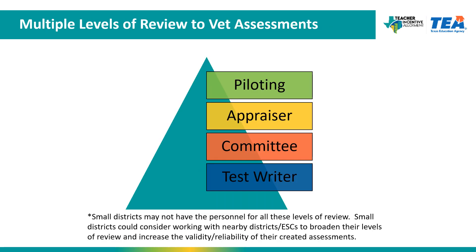This graphic shows an example of multiple levels of review that districts could utilize when implementing district-created pre-test post-tests. At the bottom is the test writer, who is the first level of review. The test writer takes the assessment to a committee — which could consist of teachers — and once approved by the committee, it is then approved by an appraiser. Lastly, it would be time to pilot the assessment, gather data, and make changes before issuing the exam. Small districts may not have the personnel for all levels of review and could consider working with nearby districts or ESCs. In some cases, the same person may do multiple levels of review, which is acceptable if the process consists of a review, followed by feedback, edits, and then another level of review. Piloting an assessment is a best practice but not a requirement.